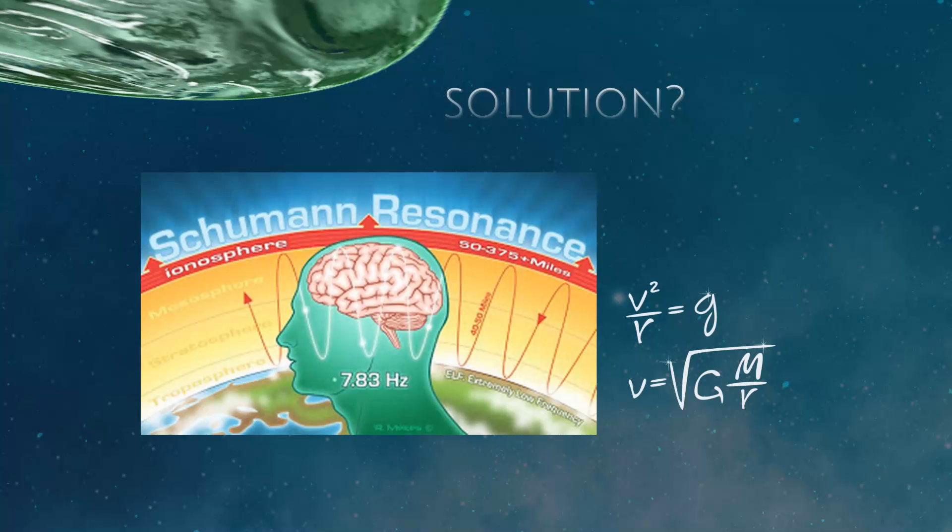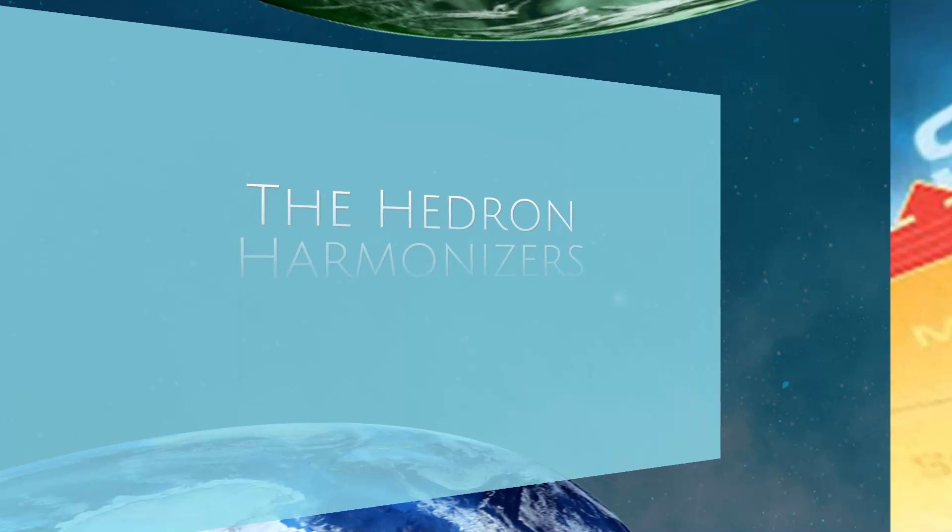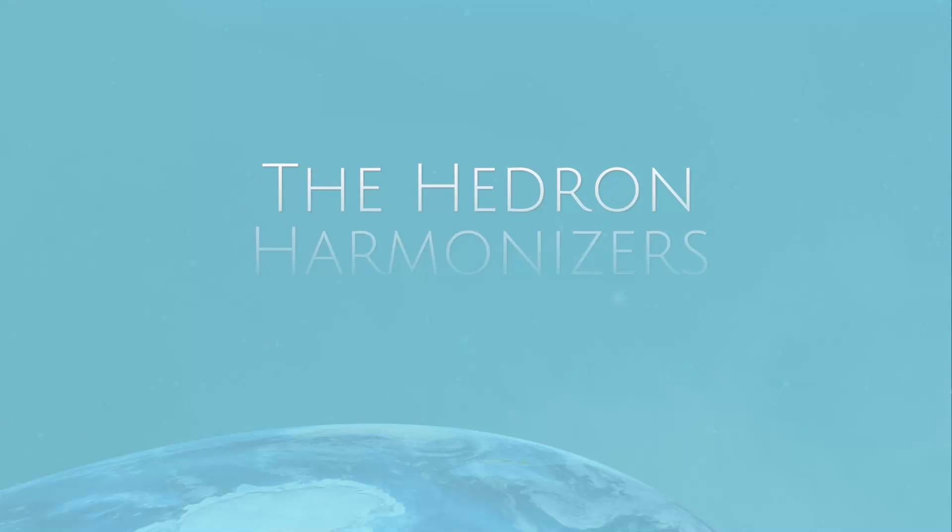One of the things that makes our device so unique is the scalar energy. Scalar energy occupies the space that it's in, meaning it is more like a field. It's not like a linear wave. So whatever it's connected to, it actually occupies that space and the space around it. So if you can think of an energy field that's in the shape of a donut, really, that space is taken up by this scalar energy, therefore harmonizing any frequencies that come in contact with that device.